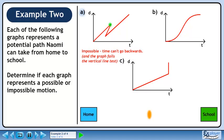It's actually pretty easy to determine if a path is possible. Just use the vertical line test. If a vertical line passes through more than one point, the motion is impossible.